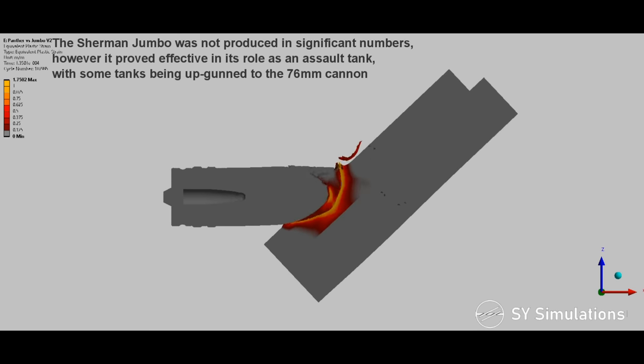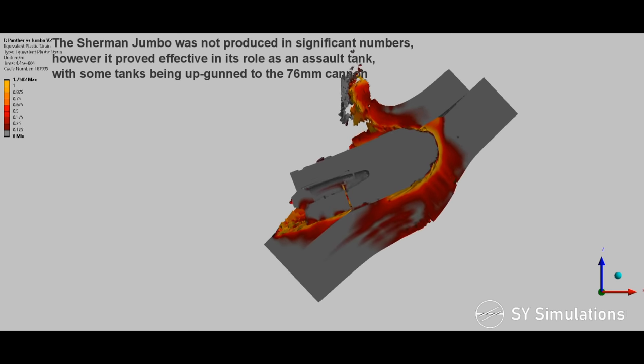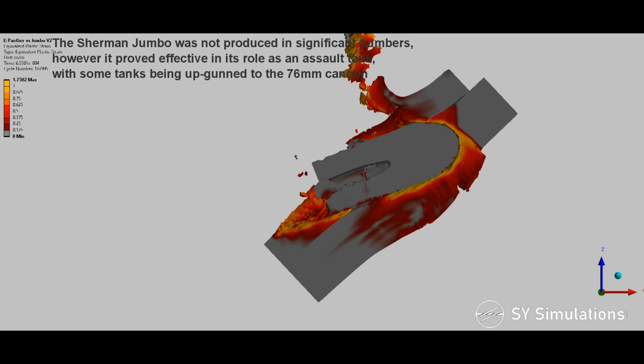The Sherman Jumbo was not produced in significant numbers, however, it proved effective in its role as an assault tank, with some tanks being upgunned to the 76mm cannon.